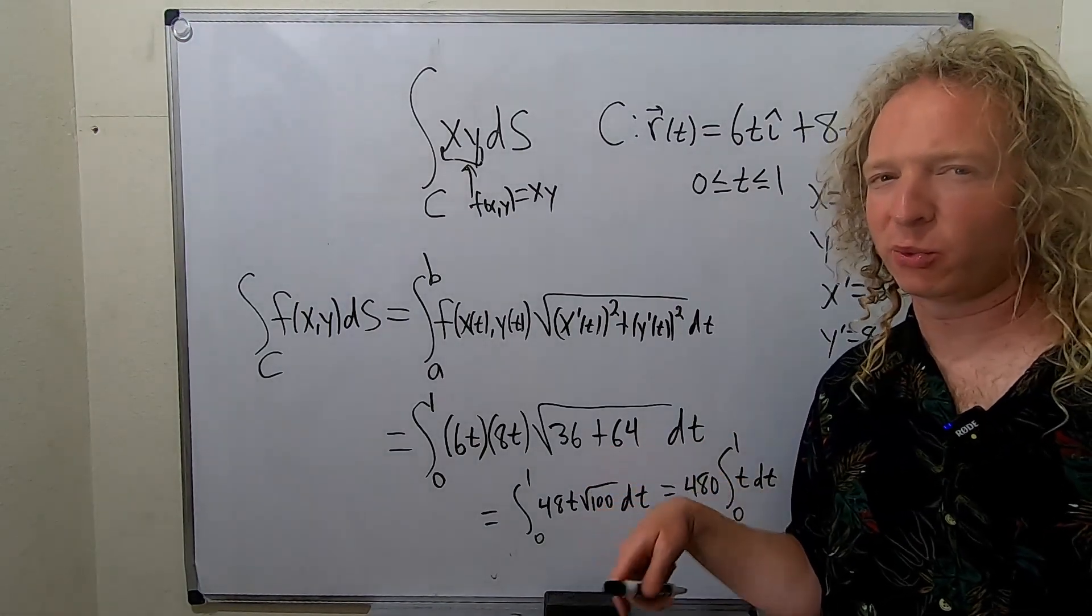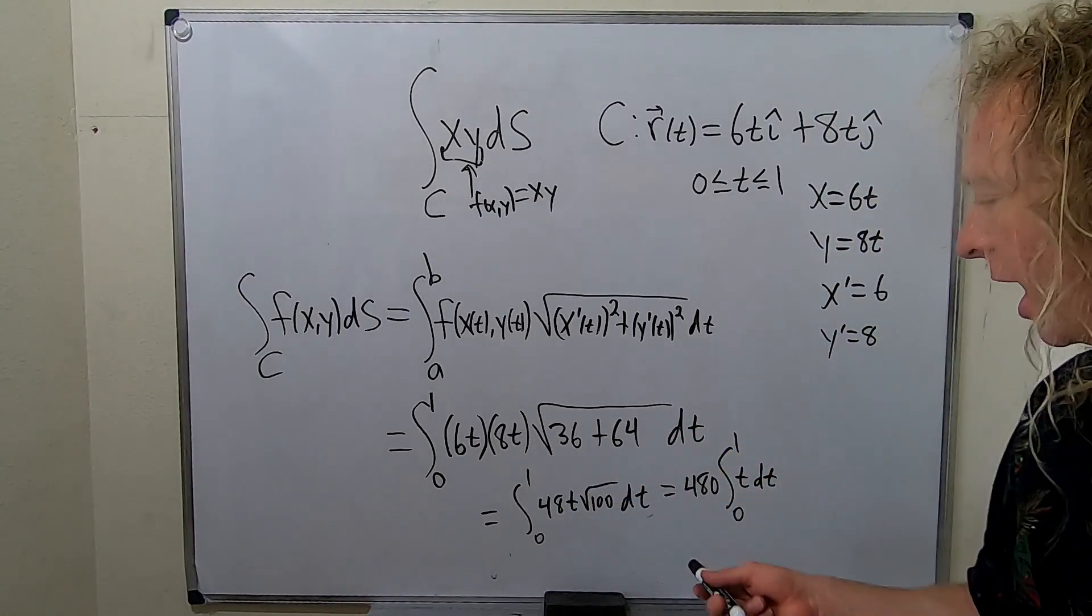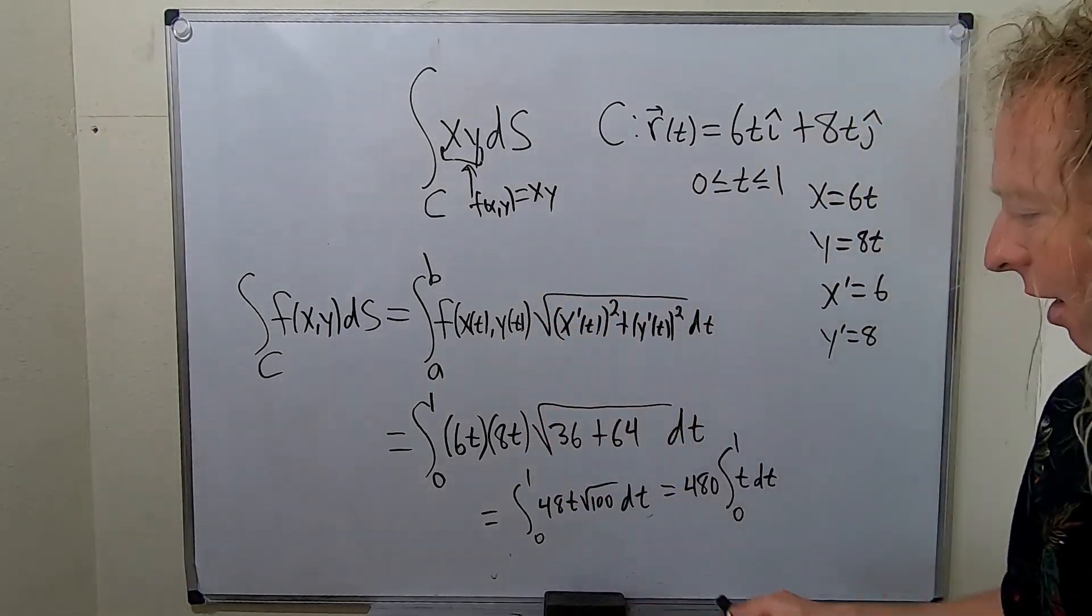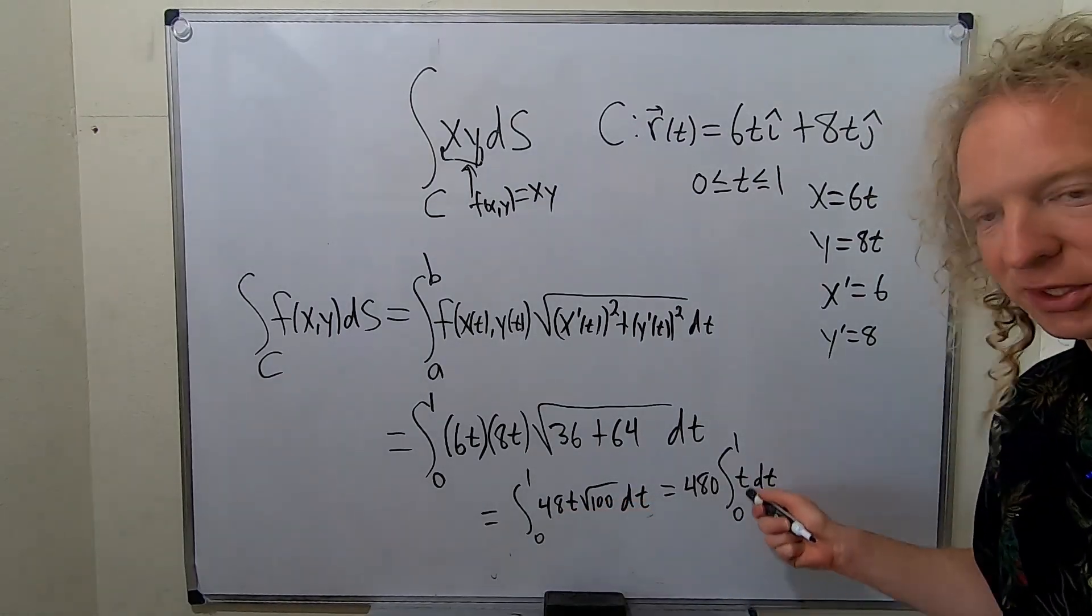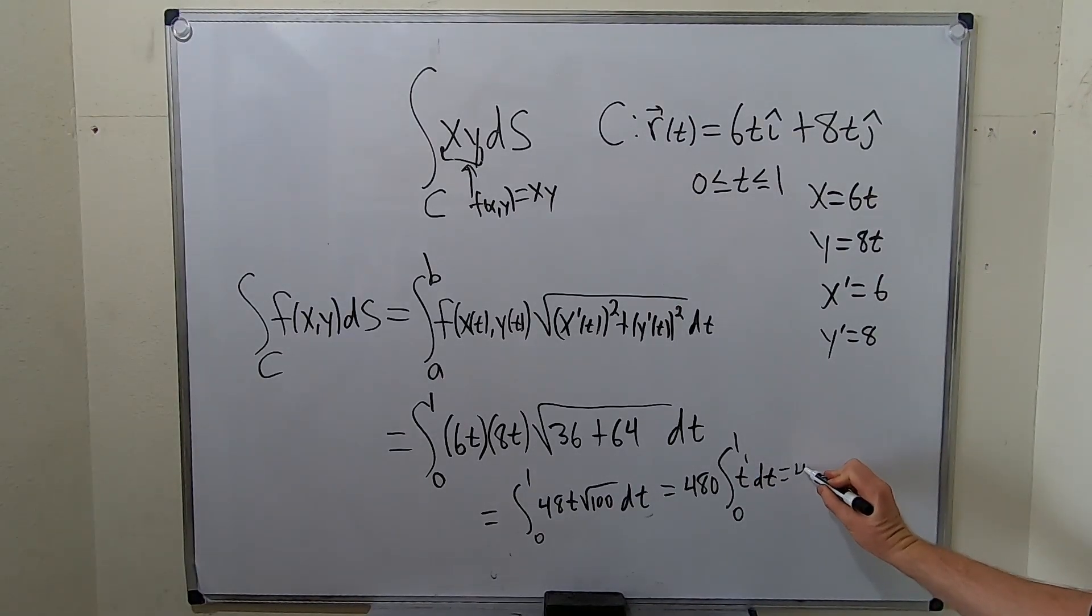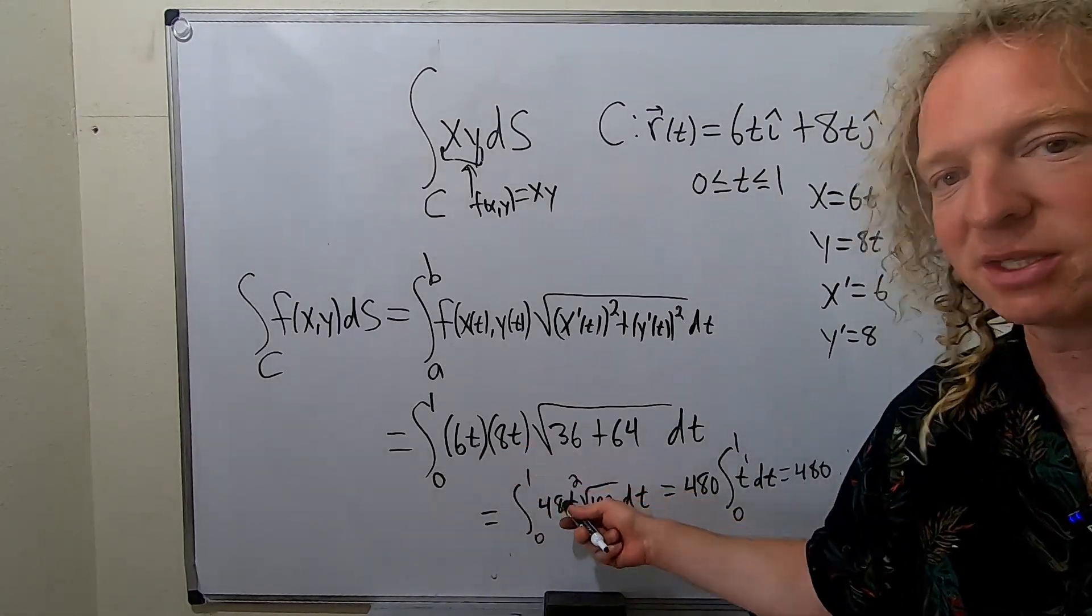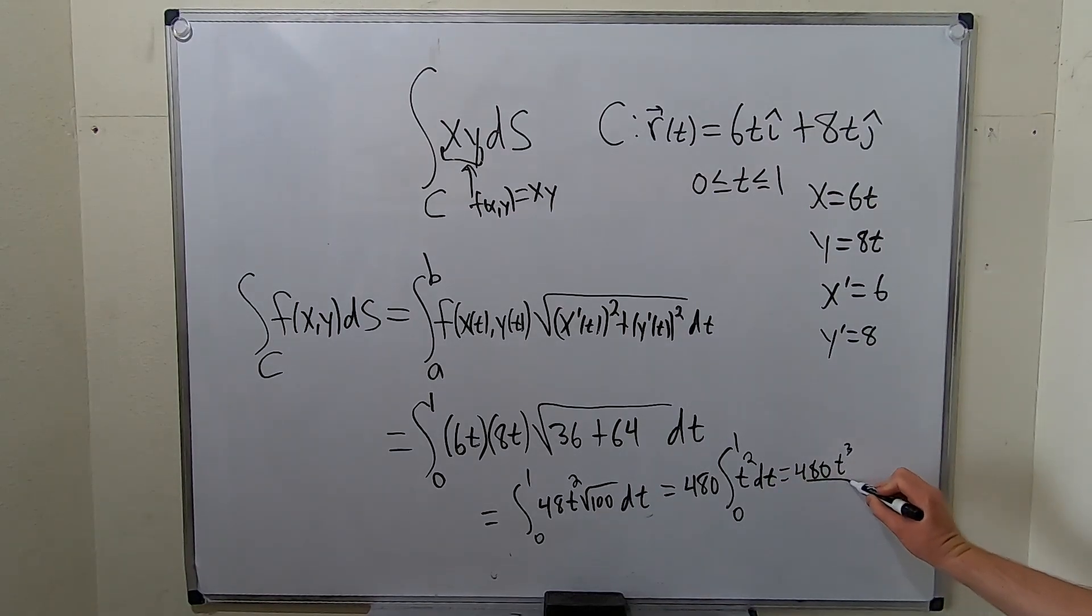Usually the integration ends up being really nice in these problems. Not always, but usually in these, especially the ones we've been doing. They're pretty easy. Once you use the formula and you simplify it, it's usually pretty easy. So square root of 100 is 10. 10 times 48 is 480. Now we're going to integrate this. There's a t here. So this is 480. Okay, t squared. Oh, oh, I see a mistake. This is t squared. T times t is t squared. I'm glad I caught that. So this is t cubed over 3. And then we're going from 0 to 1.